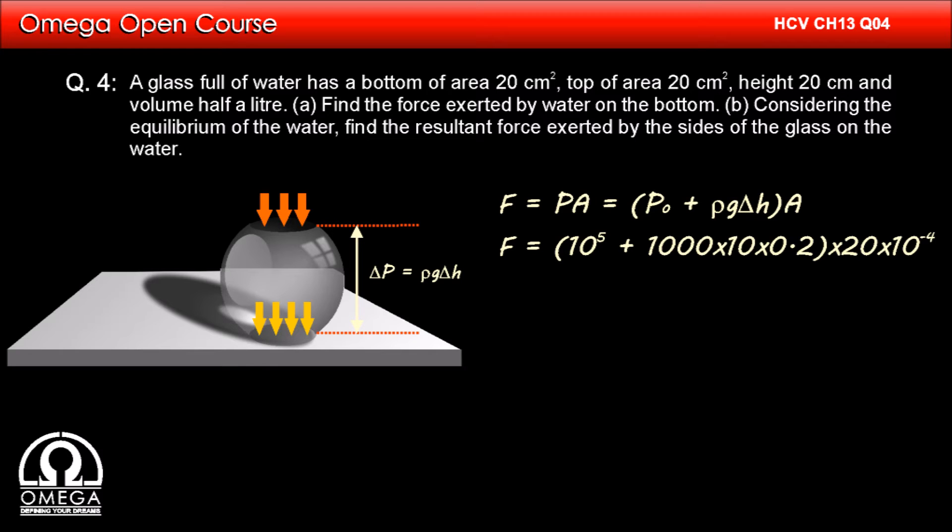Height 20 cm that is 0.2 meters, and area 20 cm² that is 20 × 10⁻⁴ meter square. We get force is equal to 204 Newton. This is answer to the first part of the question.